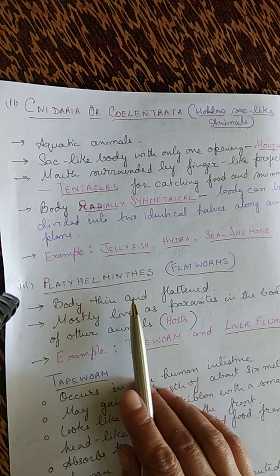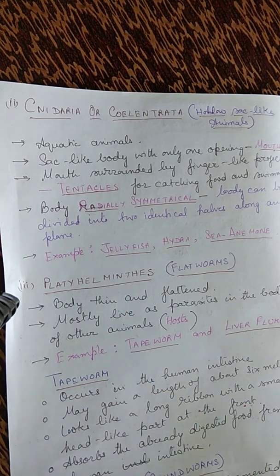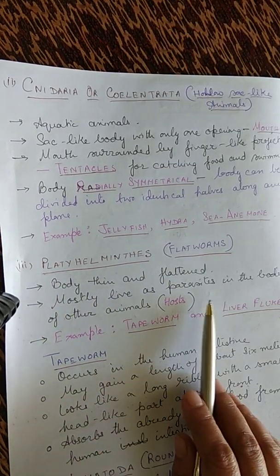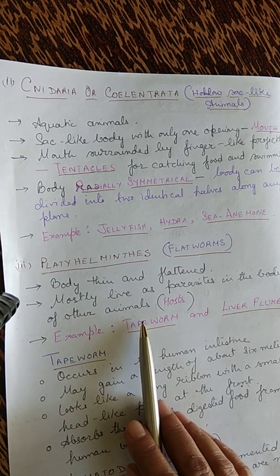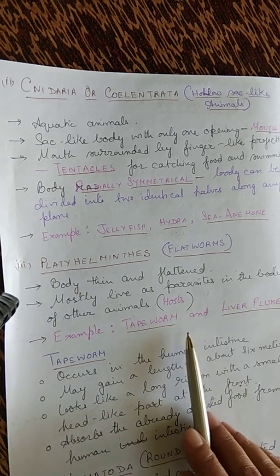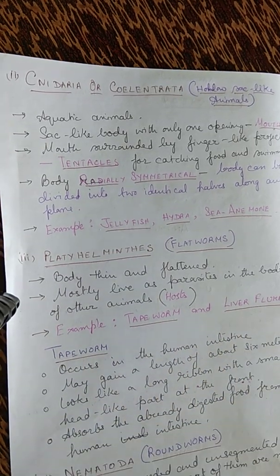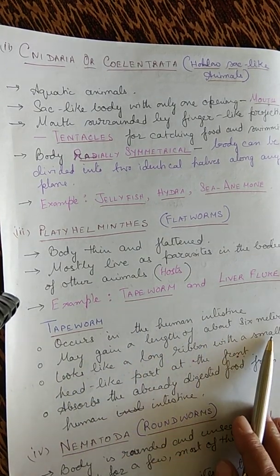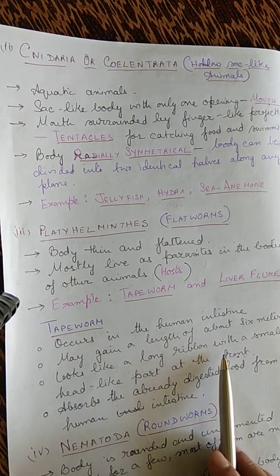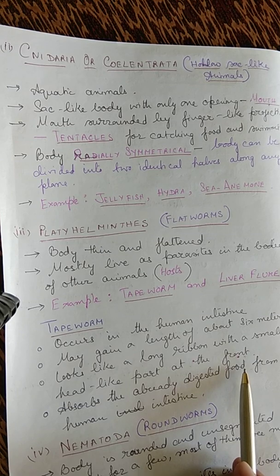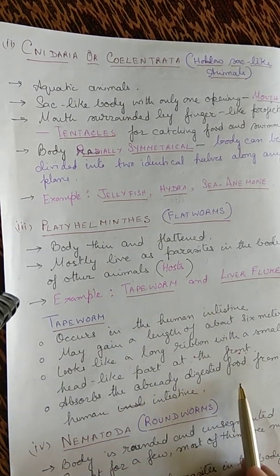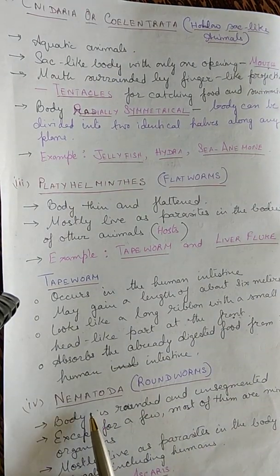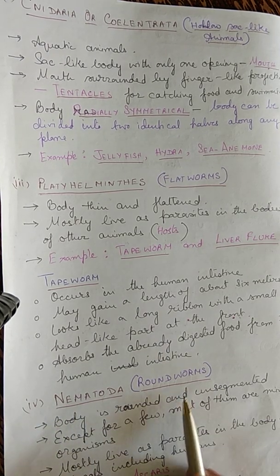The third phylum is Platyhelminthes, or flatworms. Their body is thin and flattened, and they mostly live as parasites in the bodies of other animals. Examples include tapeworm and liver fluke. The tapeworm is found in the human intestine and may grow up to about six meters in length. It looks like a long ribbon with a small head-like part at the front and absorbs already digested food from the intestine.